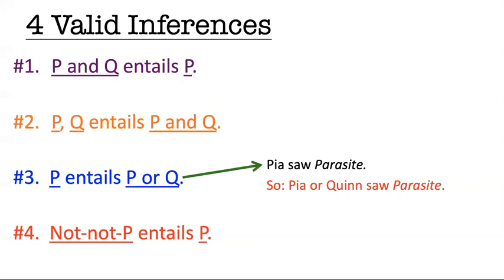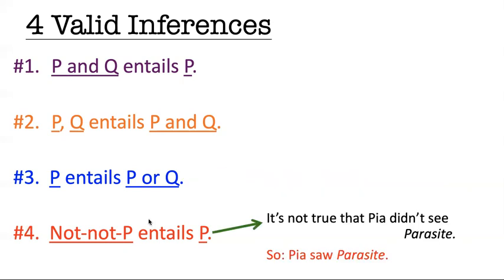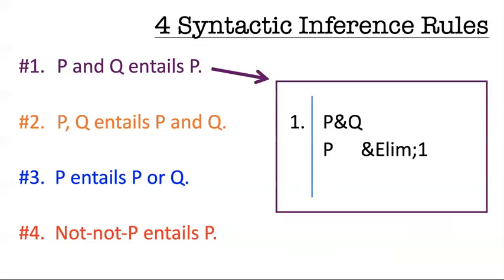How do we reason from negations? Well, if we have a double negation, that allows us to reason away from it. So if I know it's not true that P didn't see Parasite, that means she had to see Parasite — two negations can get eliminated. This is a bit like our double negation rule, but let me warn you: this is not exactly like our double negation rule. These intro and elim rules in formal proofs are different from the chain of equivalences we've done previously — that's really important to understand. I'll talk in a later video about exactly how they're different.